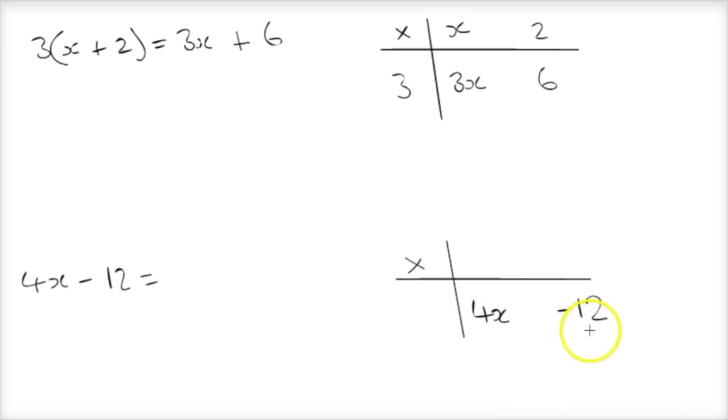And then, for whatever reason, they found it a lot easier to see that the common factor in these two terms is going to be 4.